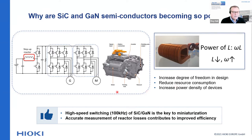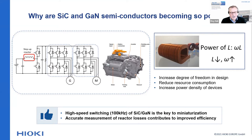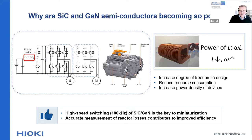SiC and GaN semiconductors can operate at higher switching frequencies and have less switching loss than traditional silicon IGBTs. All this together makes it possible to design smaller, lighter, and more efficient inverters with SiC and GaN semiconductors. Downsizing also gives engineers more freedom in their designs and reduces the use of copper. This explains the popularity of SiC and GaN semiconductors. However, there is a downside: it's much more difficult to measure power accurately at high switching frequencies like 100 kHz or even more.